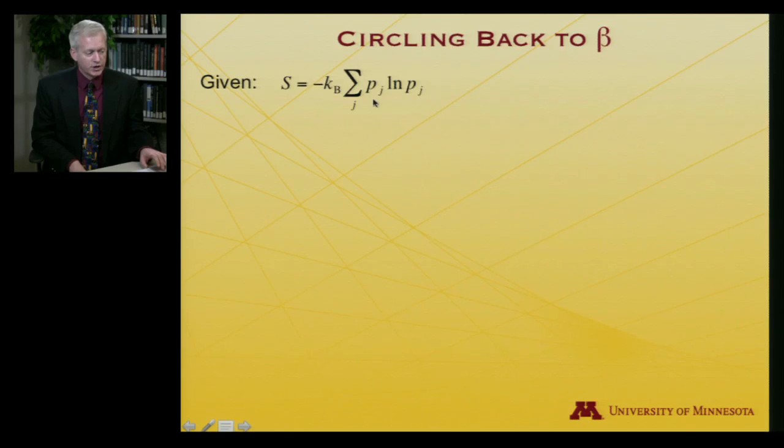All right, well, to start off this proof, if you will, let me begin with the probability form of the entropy expression. So S is equal to minus Boltzmann's constant, sum over j, probability of state j times the log of the probability of state j.